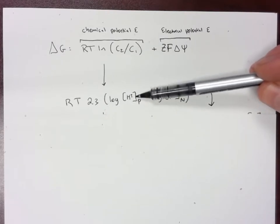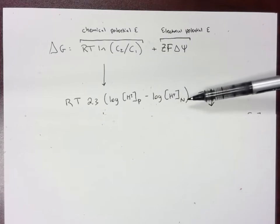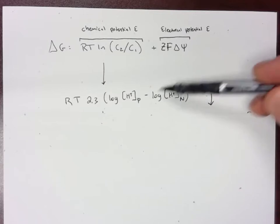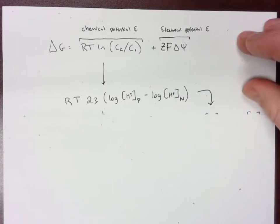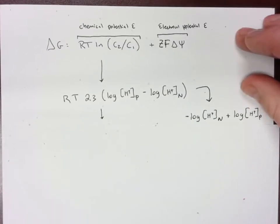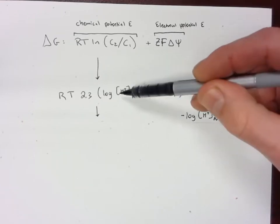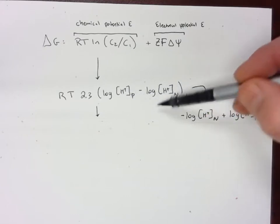And then minus log of the matrix side, so the concentration of protons on the matrix side. And we all know that negative log of H⁺ is equal to pH, so we are able to actually swap these. So the negative up here and we are adding then the positive on the right hand side.